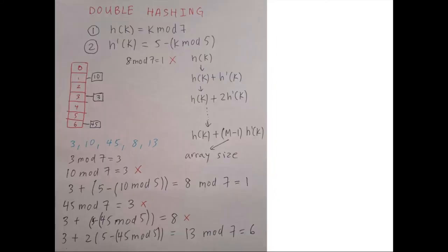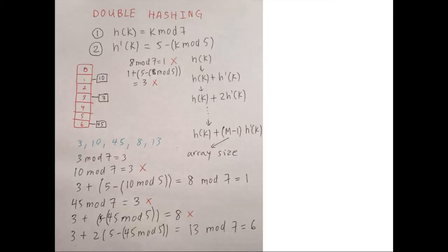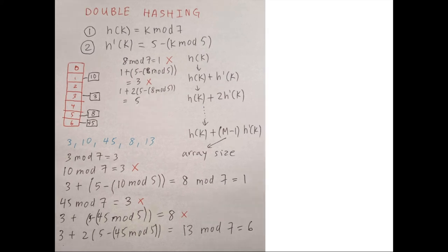Next we deal with key 8: 8 mod 7 is 1, so we add the secondary hash function — 1 + (5 minus 8 mod 5) equals 3. But index 3 is also occupied, so we add the secondary hash function again: 1 + 2 times (5 minus 8 mod 5) equals 5, and that's a valid unoccupied index, so we put 8 there.